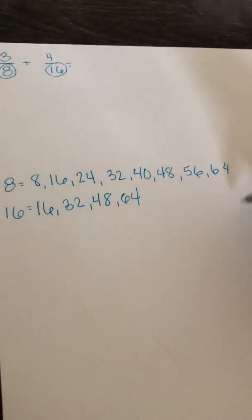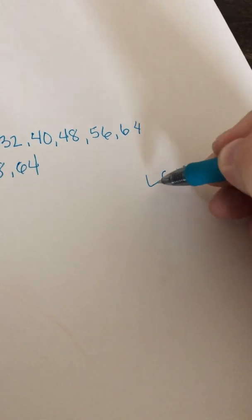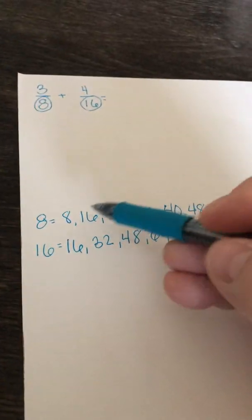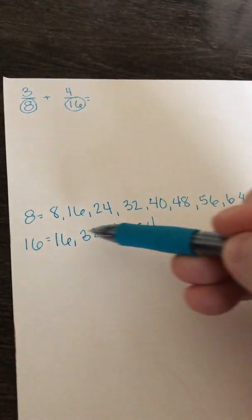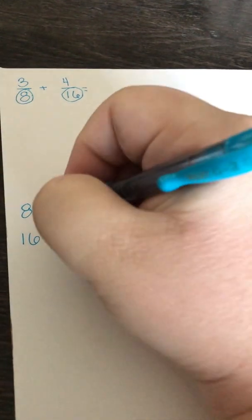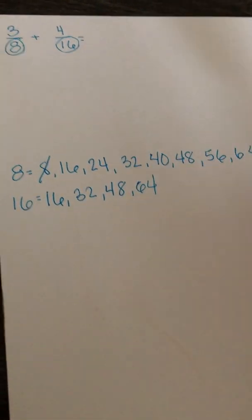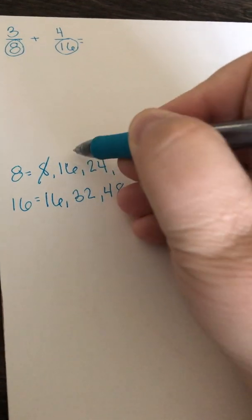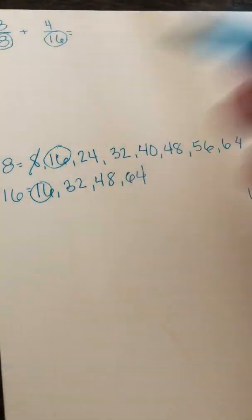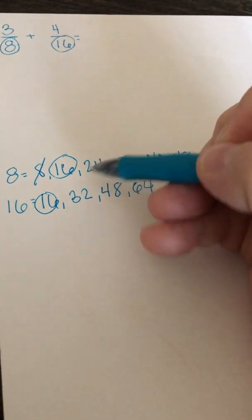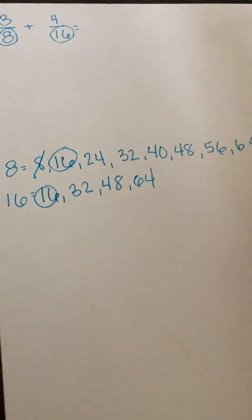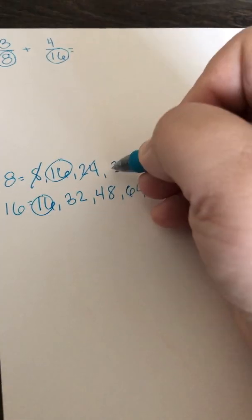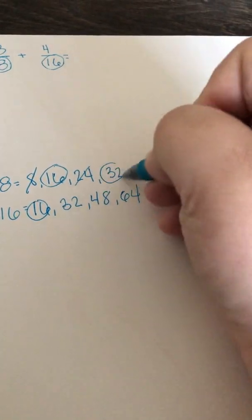Now we're going to find the LCM, the lowest common multiple. So up here we're going to look — 8 has an 8. Let's look at 16. Do they have 8? No, they do not, so that can't be it. Now we're going to look at 16 — is 16 in both numbers? It sure is. So I'm going to circle this. Now I'm going to look at 24 — is 24 in both numbers? Nope, it's only in 8. Now we're going to go to 32 — is 32 in both numbers? It is. So I'm going to circle it.